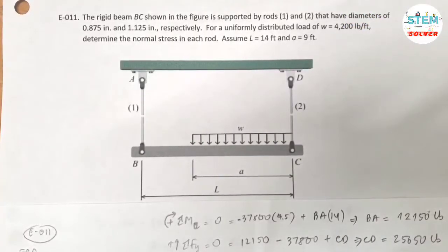The rigid beam BC shown in the figure is supported by rods 1 and 2 that have diameters of 0.875 inch and 1.125 inch respectively. For a uniformly distributed load of w equals 4200 pounds per feet, determine the normal stress in each rod. Assume L equals 14 feet and a equals 9 feet.